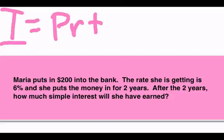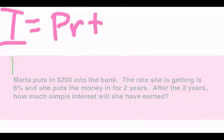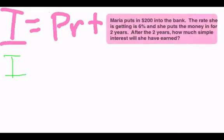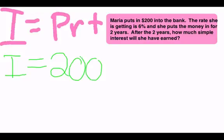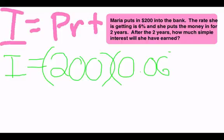The I is what we're trying to figure out, so we just rewrite that. The principal we know is $200. The rate was 6%, but we write it in a decimal. And the time was two years.